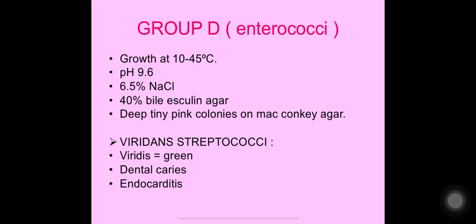The CAMP test positive and negative results are shown here. Group D — the enterococci — can grow at 10 to 45 degrees Celsius, pH 9.6, 6.5% sodium chloride, and 40% bile on esculin agar. These are characteristic features of enterococci: high pH, high salt concentration, high bile concentration, and high temperature tolerance up to 45 degrees Celsius.